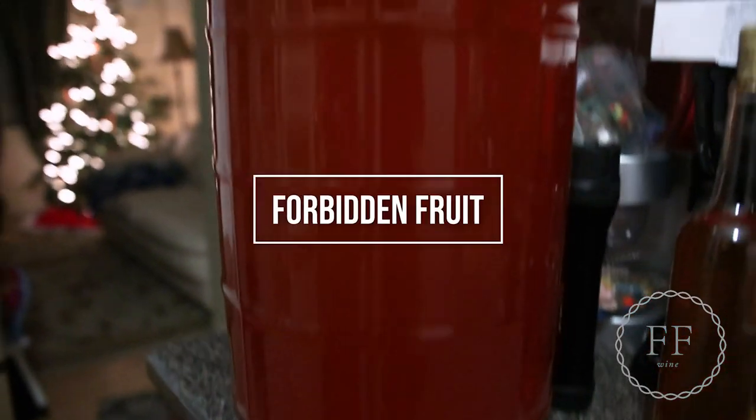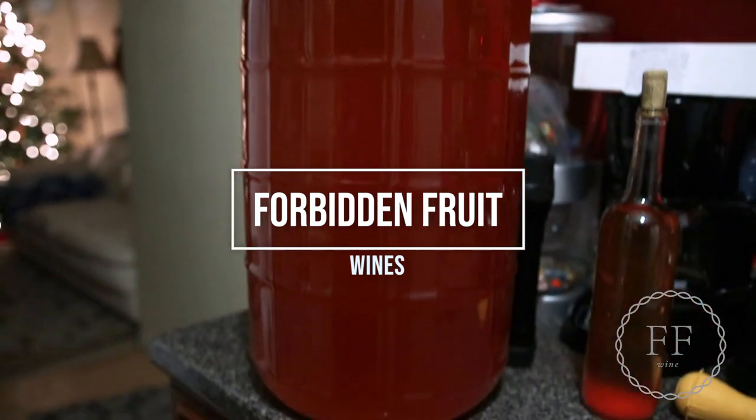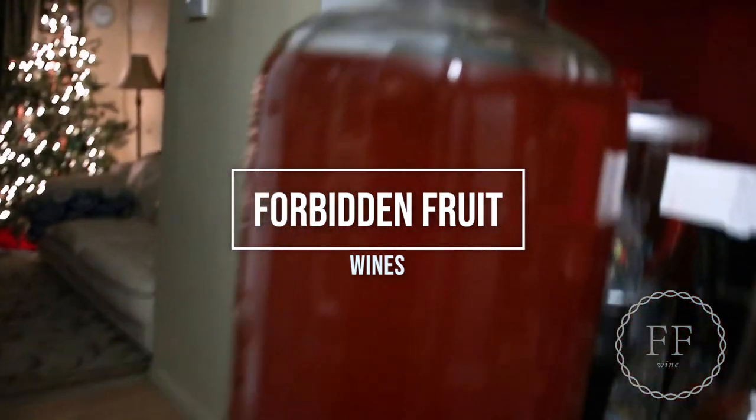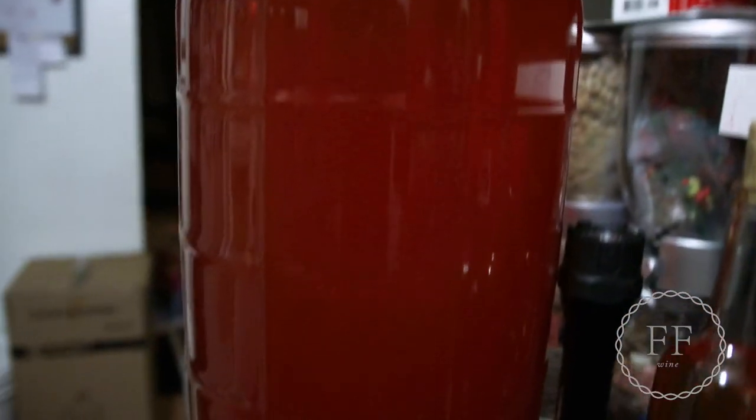It's Daniel here with Forbidden Fruit Wines, and here we have the six-gallon carboy. This is a strawberry wine, and today we are going to add in some bentonite clay to aid the clearing process.